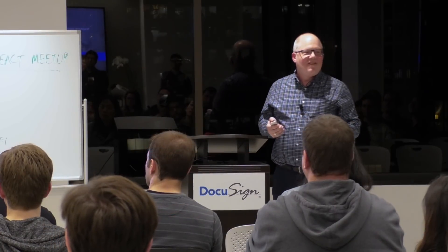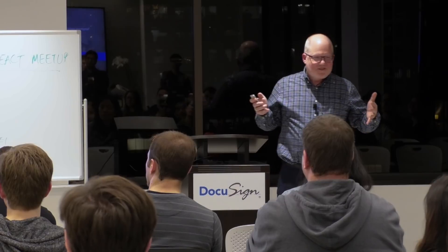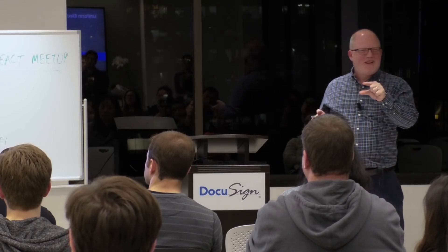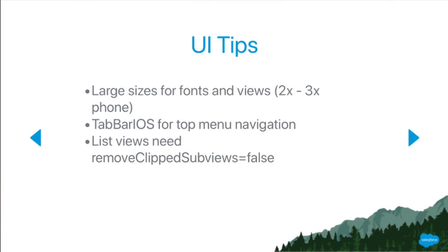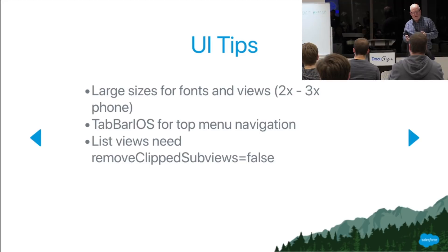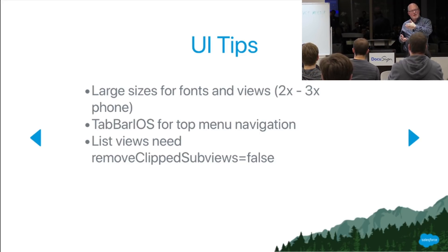UI tips: this is not a phone — it's a huge screen. Don't use 10-point font sizes. You typically want to make your font sizes two or three times bigger to make them visible. If you're building an app that works on both iOS and tvOS, you'd want some styling pivots. We provide a platform.isTVOS property so you can know whether you're running on TV or on an iOS phone.